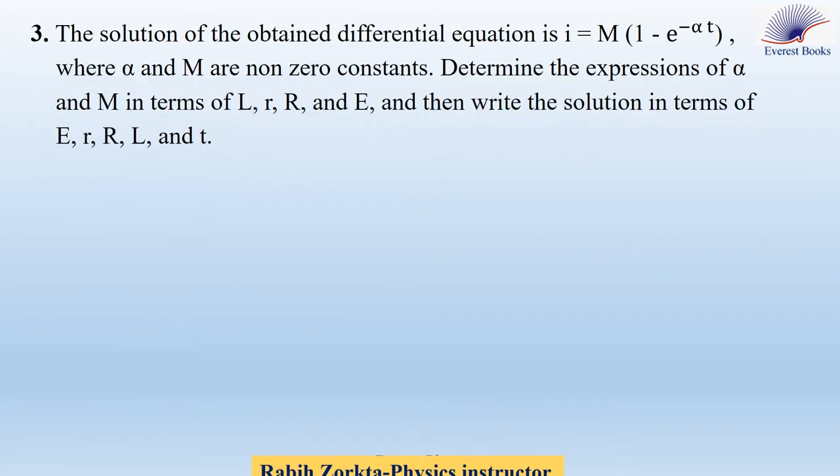Part 3: the solution of the obtained differential equation is I equal to M·(1 minus e to the power minus α·T), where α and M are non-zero constants. Determine the expressions of α and M in terms of L, small r, capital R, and E, and write the solution in terms of E, R, r, L, and T. To determine the expressions of α and M, we have three steps: first, differentiate I with respect to time; second, substitute I and dI/dt in the differential equation; and third, solve the equation.